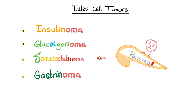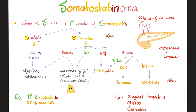The islet cell tumors of the pancreas include insulinoma, glucagonoma, somatostatinoma, gastrinoma or Zollinger-Ellison syndrome, as well as VIPoma. With that in mind, let's talk about somatostatinoma. It's a tumor of the delta cells in the islets of Langerhans in the pancreas. This tumor secretes too much somatostatin, which inhibits the motility of the stomach and intestine and inhibits secretion.